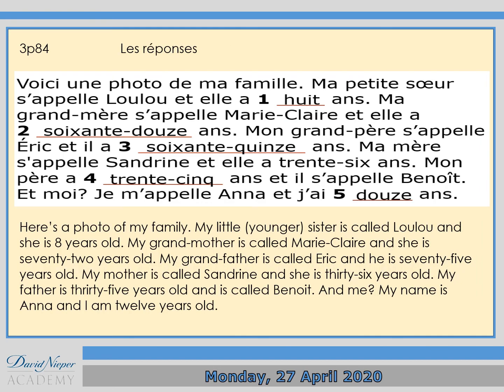Et voilà la réponse. Here's a photo of my family. My little younger sister is called Lou and she's 8 years old. My grandmother is called Marie-Claire and she's 72 years old. My grandfather is called Éric and he's 75 years old. My mother is called Sandrine and she's 36 years old. My father is 35 years old and he's called Benoît. And me, my name is Anna and I'm 12 years old. When you look at that, you can see ma and mon. And when you talk about the age of someone, you don't use 'is' — meaning est in French.